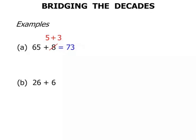The next one. 26 plus 6. Well, if we think of 26 we need another 4 to bridge the decade. So let's break the 6 up as 4 plus 2. So 26 plus 4, that bridged the decade, that got to 30. And 30 plus 2 equals 32.